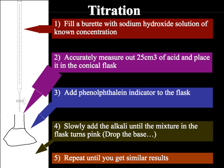Into the conical flask, you add your indicator — in this case phenolphthalein, which is a good indicator for a weak acid and strong alkali, with a very distinctive colour change. You then slowly add the alkali from the burette a little at a time. Phenolphthalein is colourless in acid but turns a very distinctive pink in alkali. After adding small amounts of alkali, fully stir the flask to check for a constant pink colour, then record the volume of alkali used.